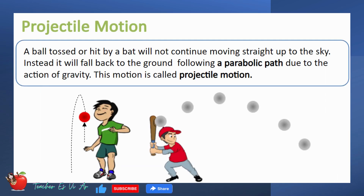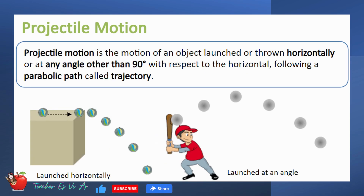When a ball is tossed upward it will not continue moving straight up to the sky, same with a ball hit by a bat. Instead, it will fall back to the ground following a parabolic path due to the action of gravity. This motion is called projectile motion — the motion of an object launched or thrown horizontally or at any angle other than 90 degrees with respect to the horizontal, following a parabolic path called trajectory.